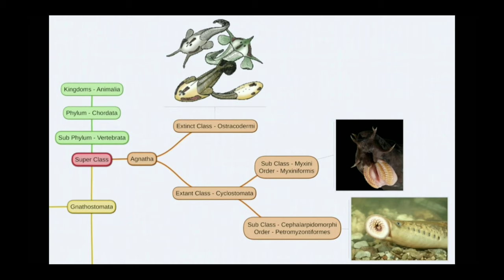Ostracodermi has no living species on Earth. We can see their images — they are dorso-ventrally flat, have only median fins, no pectoral or pelvic fins, and a flattened tail. The extant class Cyclostomata are living on Earth, and have two subclasses: subclass Myxini and subclass Cephalaspidomorphi.